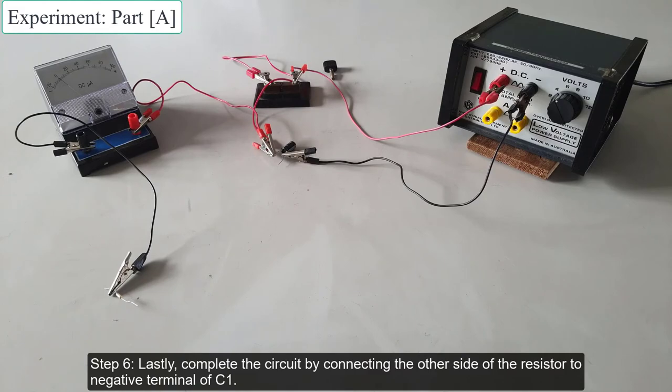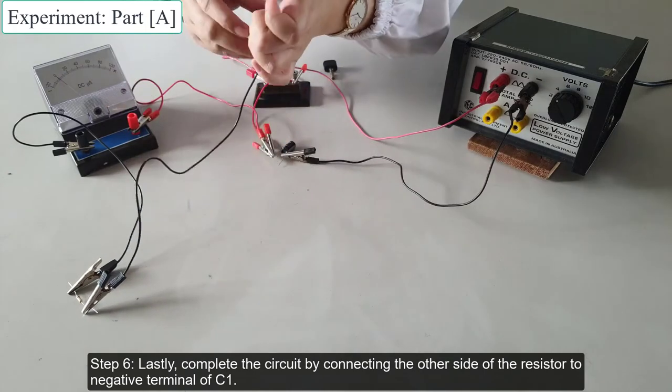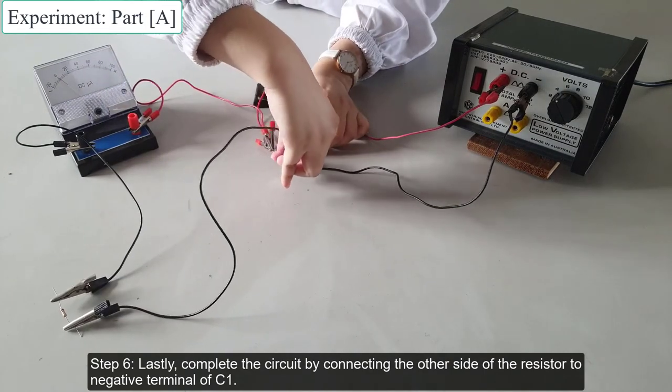Lastly, complete the circuit by connecting the other side of the resistor to the negative terminal of C1.